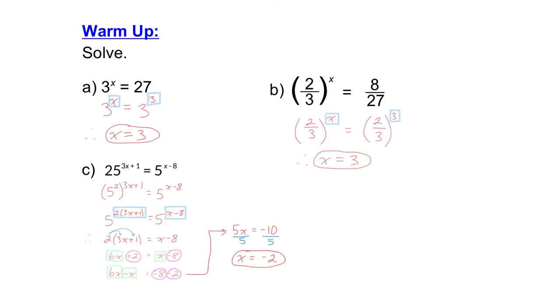All right, here are my solutions. So for the first one, I can turn 27 into a power with a base of 3. It's 3 to the exponent 3. So I have powers with the same base equal to each other. That means the exponents are equal to each other, which means x equals 3.